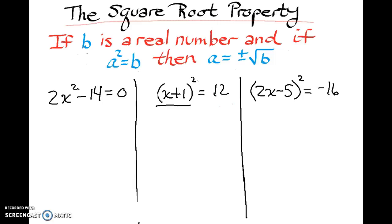The square root property says that if b is a real number, and if a squared equals b, then you can take the square root of both sides, and your answer has both a positive answer and a negative answer. Unlike what we were doing with our radicals, we had said,